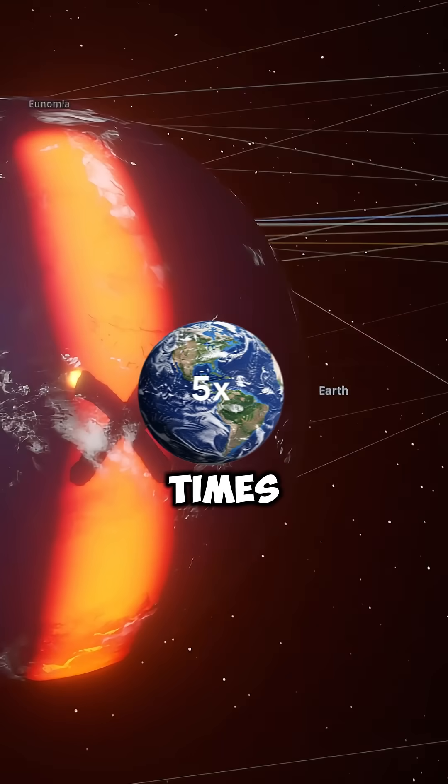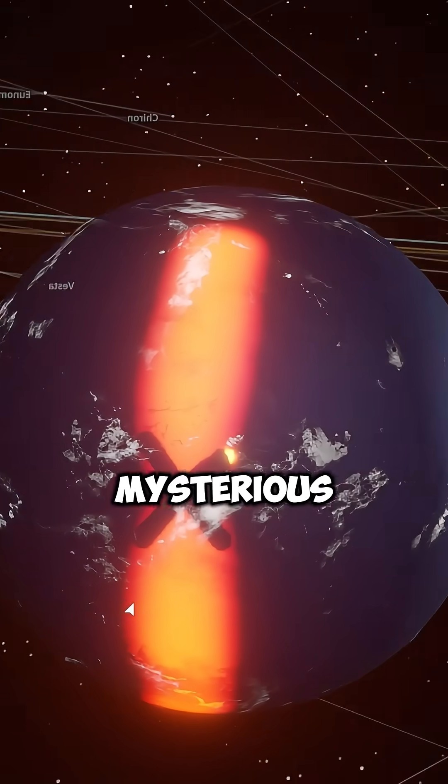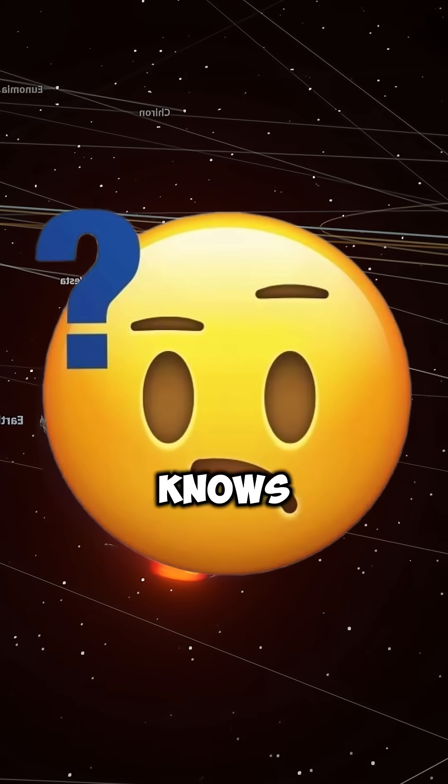This planet is about five times larger than Earth. It's basically pure water, with the famous red line, grand line, and that mysterious X in the middle that nobody knows anything about.